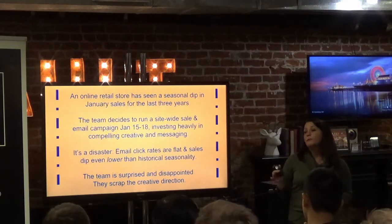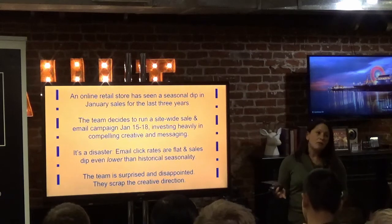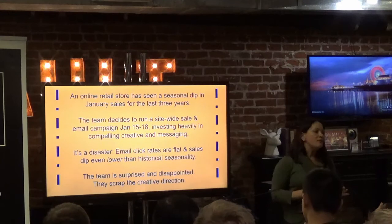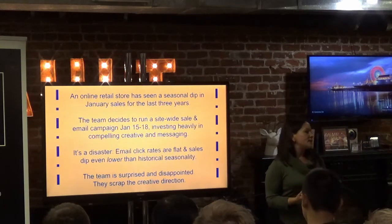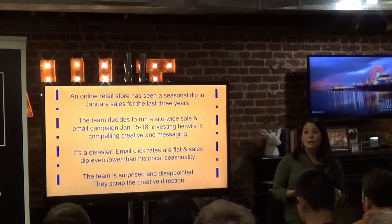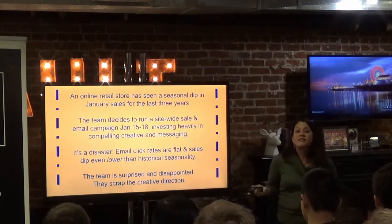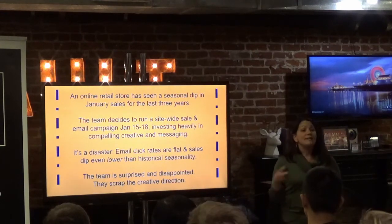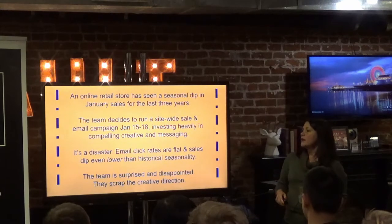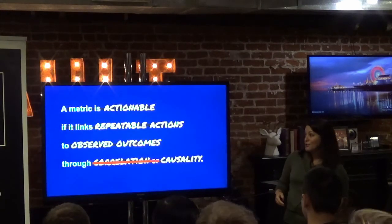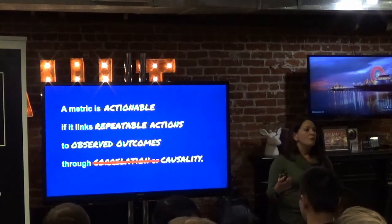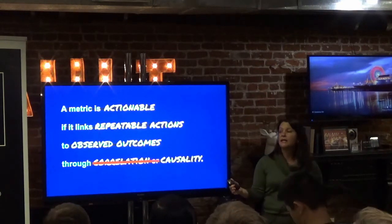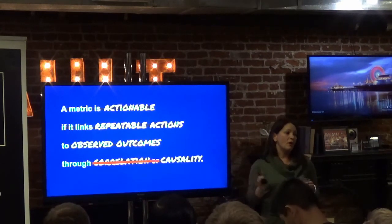Basically what was really going on was that there was no causality in there. Sometimes you think you know what's going on — it looks super obvious — but if you can dig in and really figure out what's going on, you can find out that it's not really the case. It happens in a lot of other examples that are less dramatic than this. So the metric is actionable when it's a repeatable action that you're going to change the way people are taking it, and it's going to lead to an observable outcome through causation.